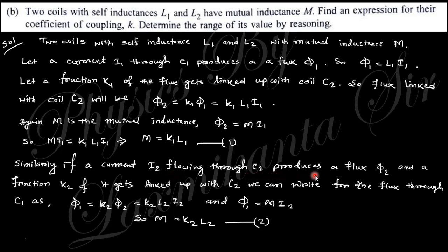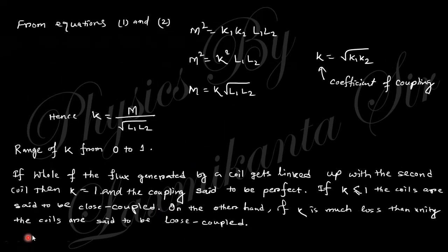Similarly, if a current i2 flows through C2 producing a flux with fraction k2 linked with C1, we get a similar expression. Comparing the two equations, we get M = k·√(L1·L2), where k is known as the coefficient of coupling. So the coefficient of coupling is k = M / √(L1·L2). Its value ranges from 0 to 1. When k = 1 the coils are perfectly coupled; when k is much less than 1 they are loosely coupled.